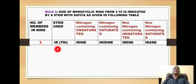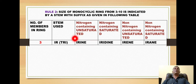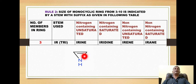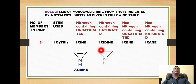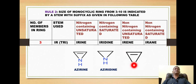For a three-membered nitrogen-containing ring that is completely unsaturated, we use the suffix 'irine'. This three-membered, completely unsaturated nitrogen ring uses the prefix 'aza' with the suffix 'irine', giving the name 'azirine'. For a saturated three-membered nitrogen ring, we use the suffix 'iridine', giving the name 'aziridine'.